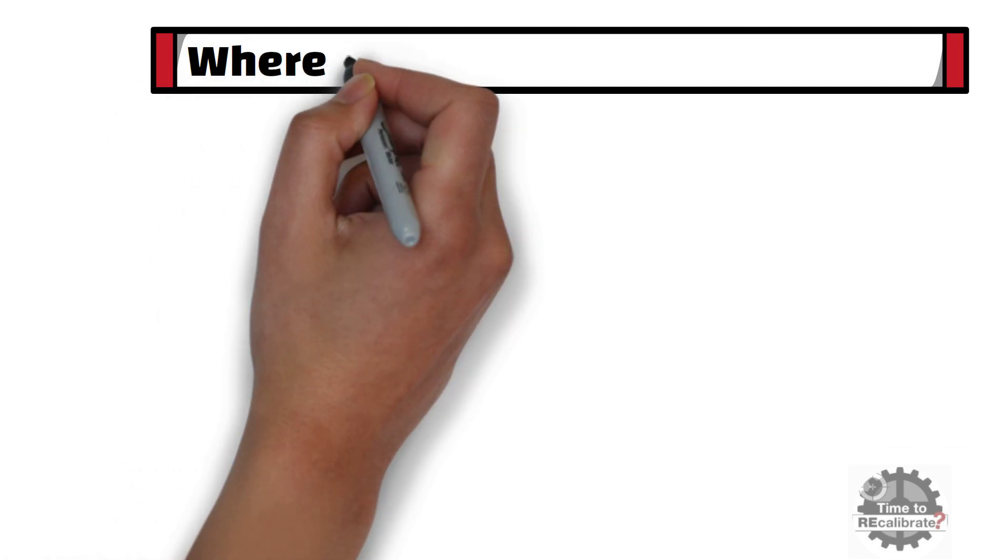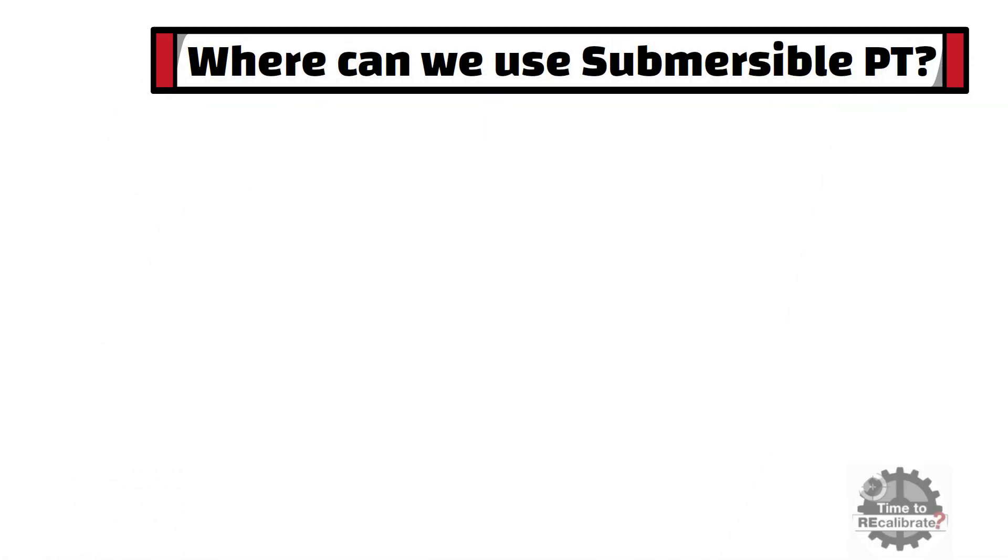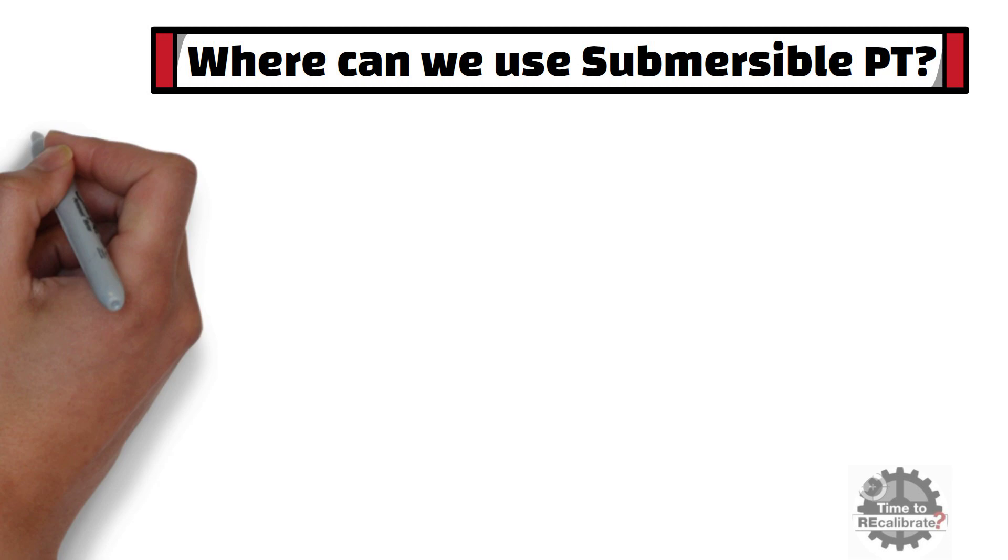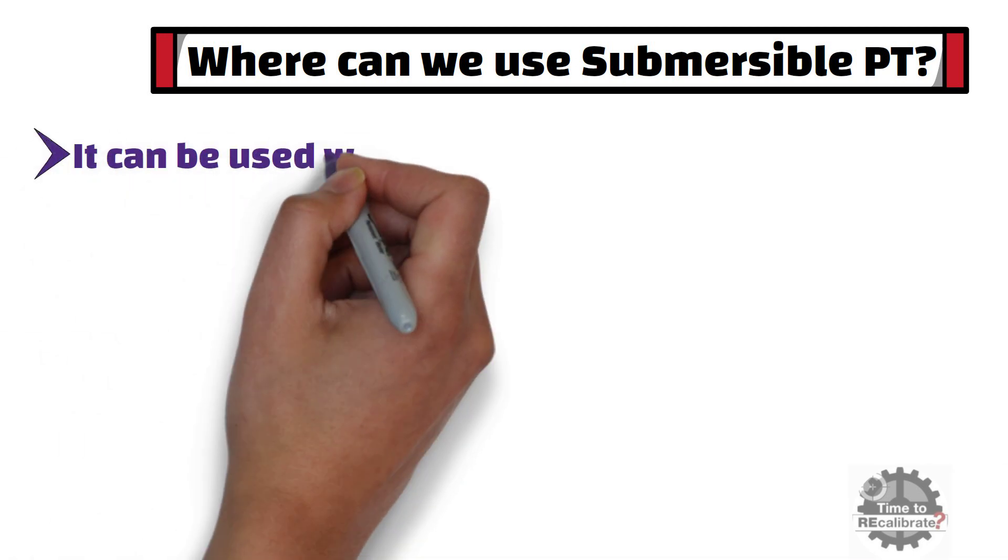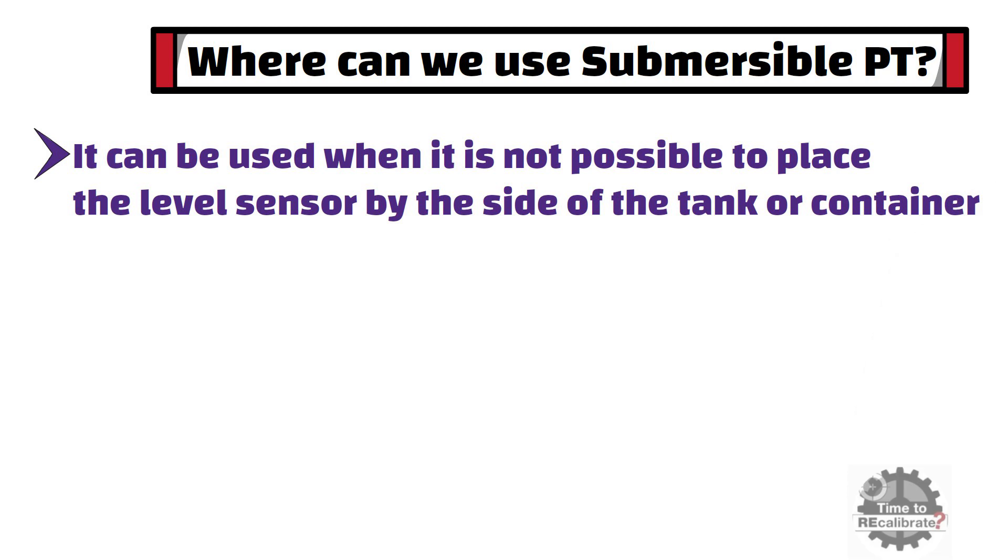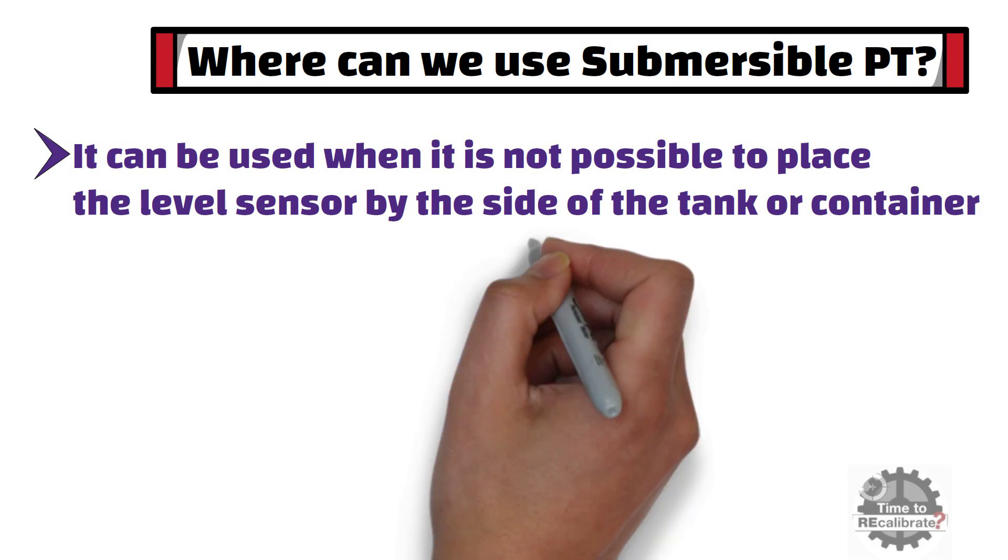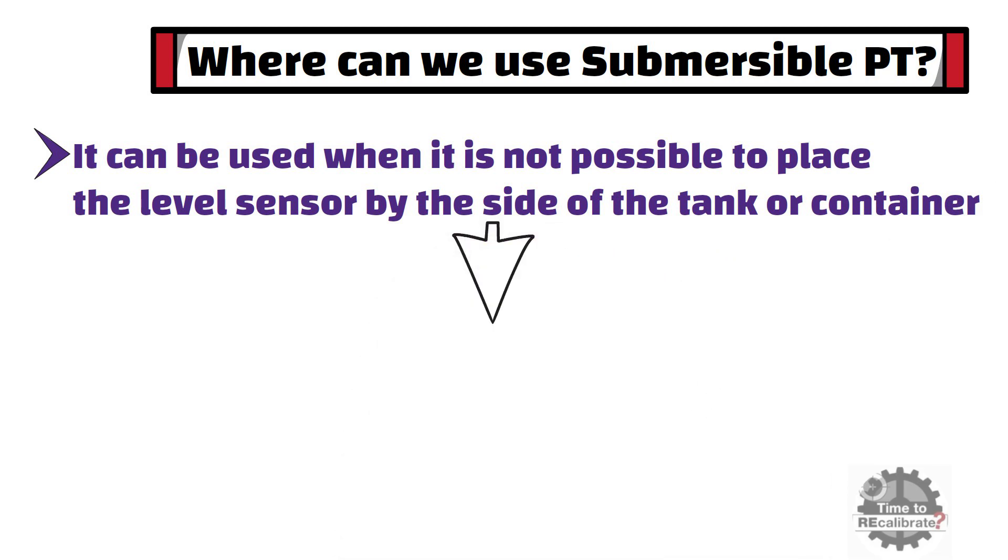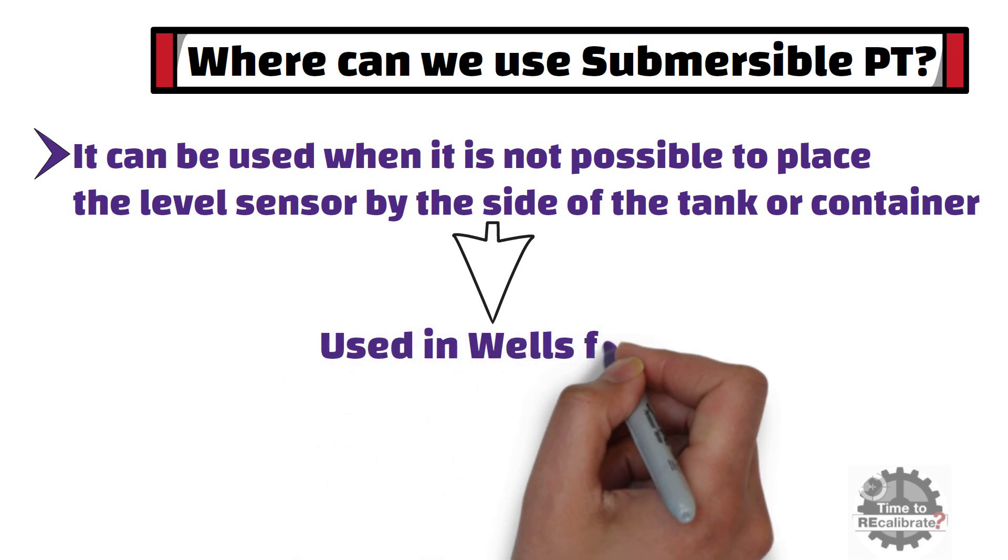Lastly, where can we use submersible pressure transmitter? Submersible sensor can be used when it is not possible to place the level sensor by the side of the tank or container. For example, submersible sensors are most commonly used in wells for level measurement purpose.